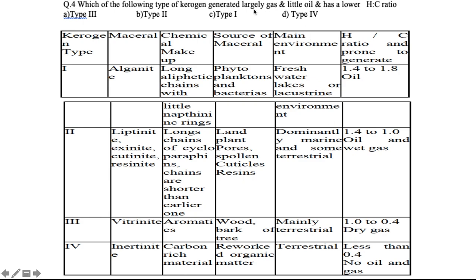The question asks about little oil, largely gas, and a lower H/C ratio. Type 3 has a lower H/C ratio, gas is largely present, and a little oil is also there. So the right answer is Type 3. Remember: Type 1 has oil deposits; Type 2 has oil and wet gas; Type 3 has very little oil and dry gas; and Type 4 is inert — no oil or gas.